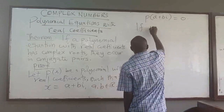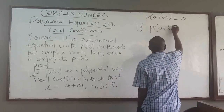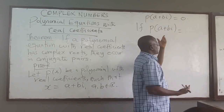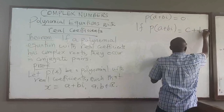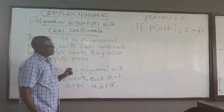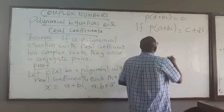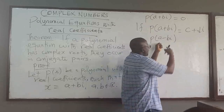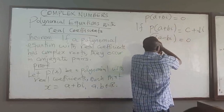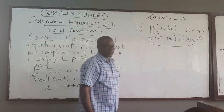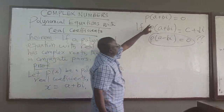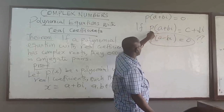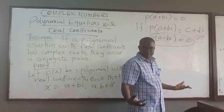Now, if p(a plus bi) equals some complex number c plus di, this theorem says that if a plus bi is a root — meaning p(a plus bi) equals zero — then p(a minus bi) must also be a root. So we need to prove that if p(a plus bi) equals zero, then p(a minus bi) equals zero as well.